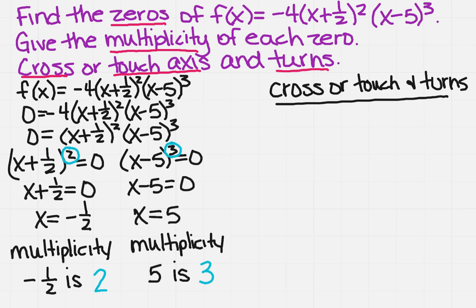So the third part of the question wants us to know whether it crosses or touches the x axis and how it turns or if it does. So what we need to look at is the multiplicity, is it odd or is it even. So if I look at the minus one half we said that its multiplicity is two and that's even. So now if it's even what does that mean? Well it means it's going to touch the x axis and it's also going to turn around at this zero.